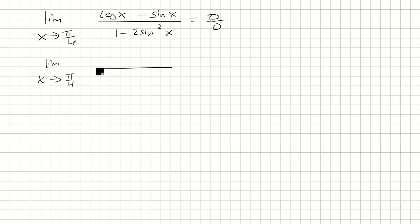We have cos x - sin x at the top, and then 1 - 2sin²x can be rewritten as 1 - sin²x - sin²x. This right here is going to be cos²x.